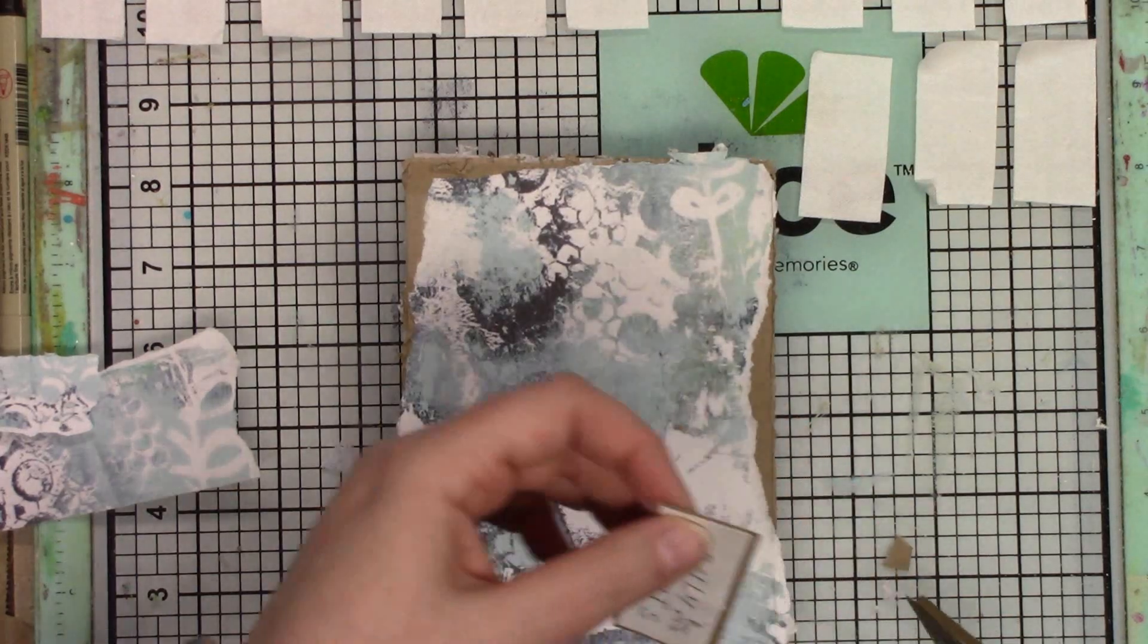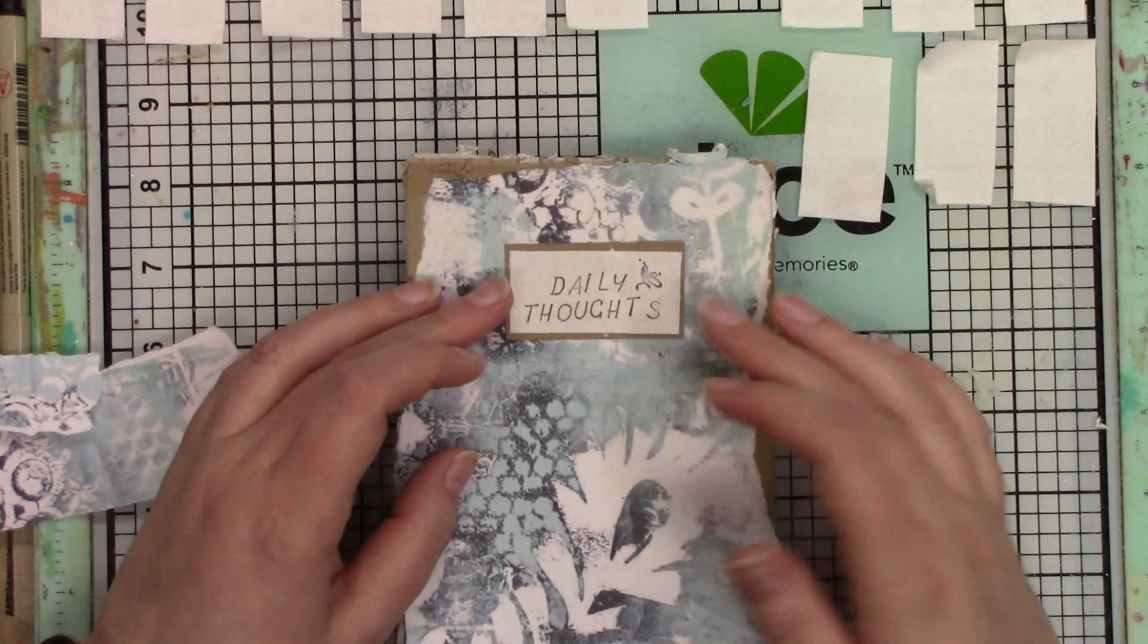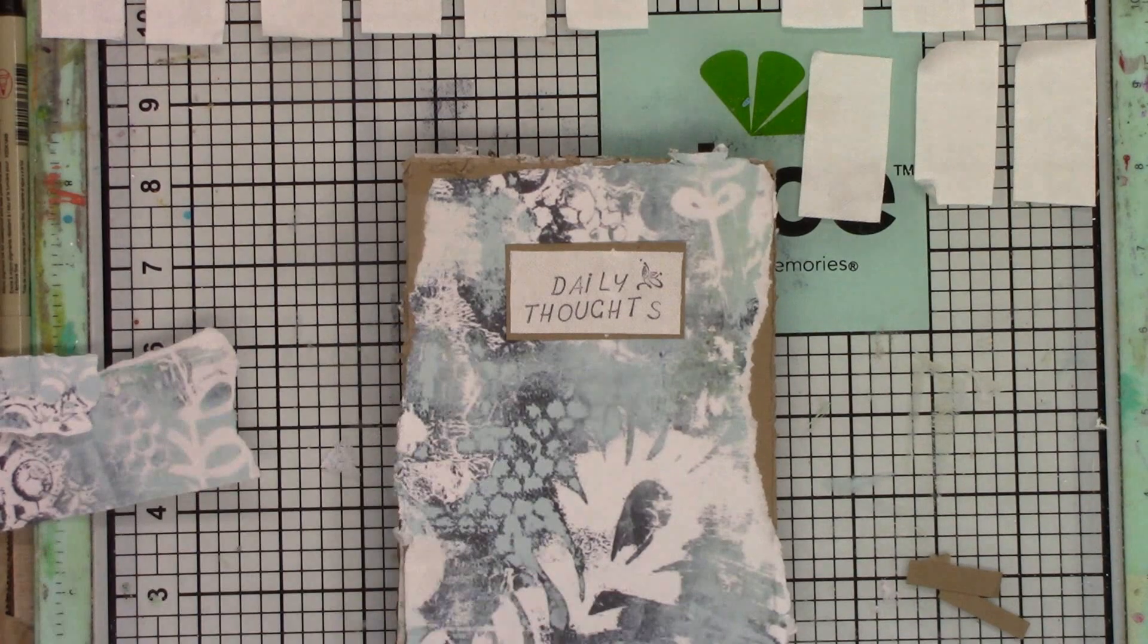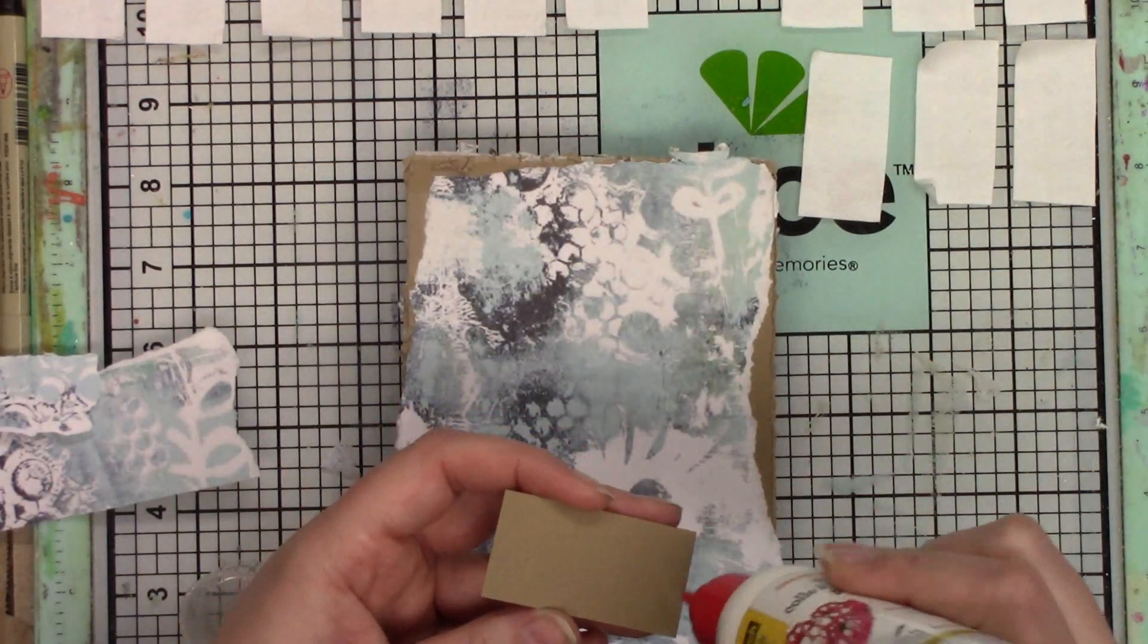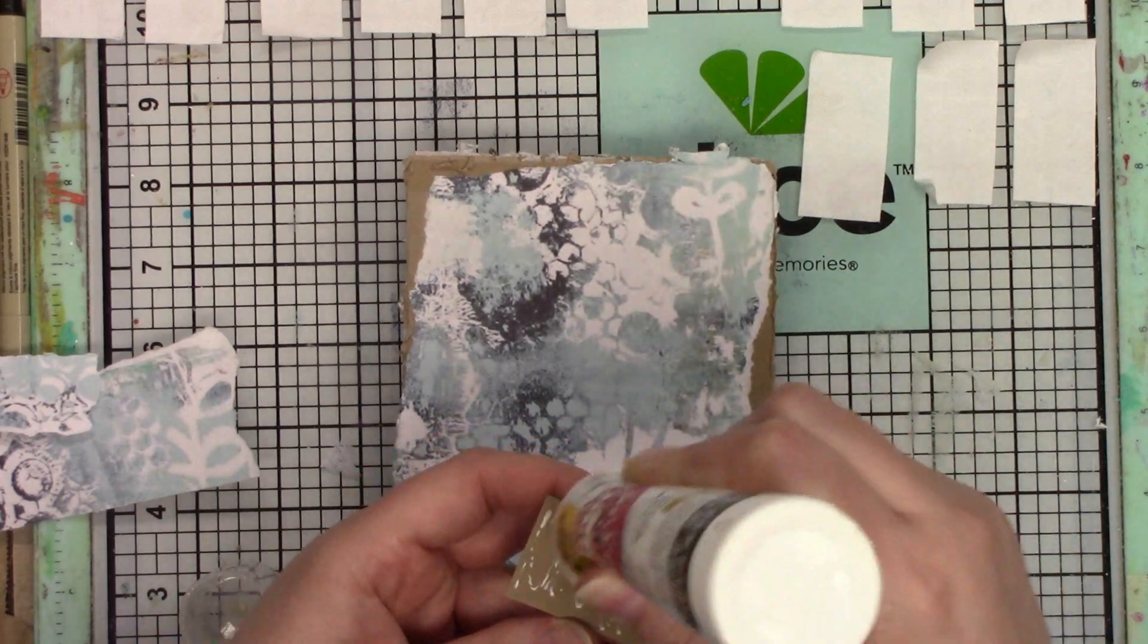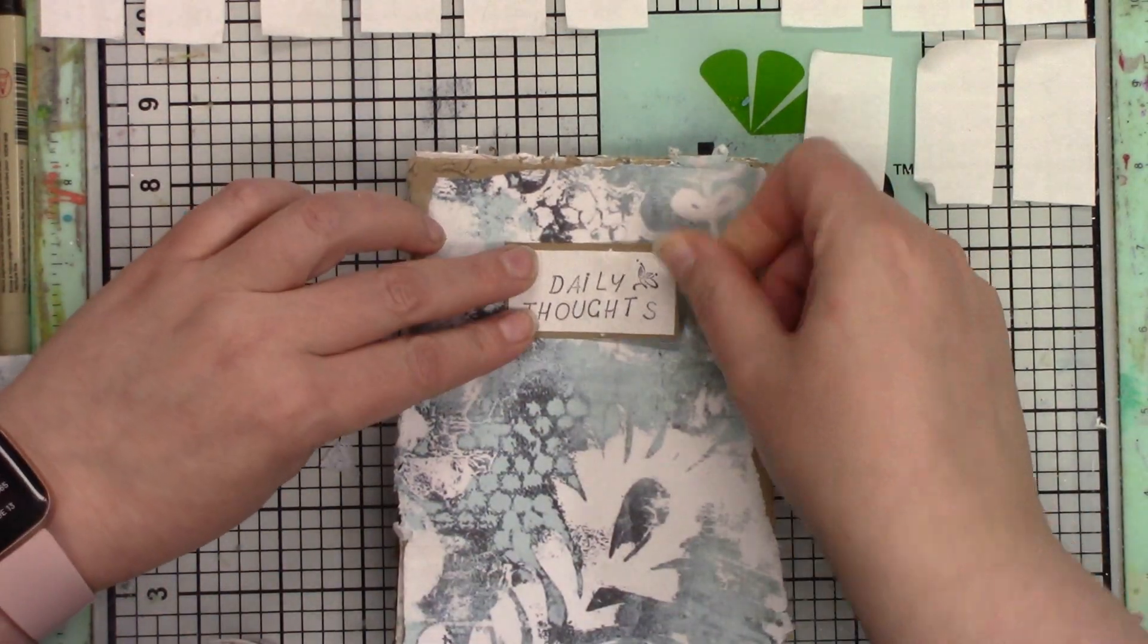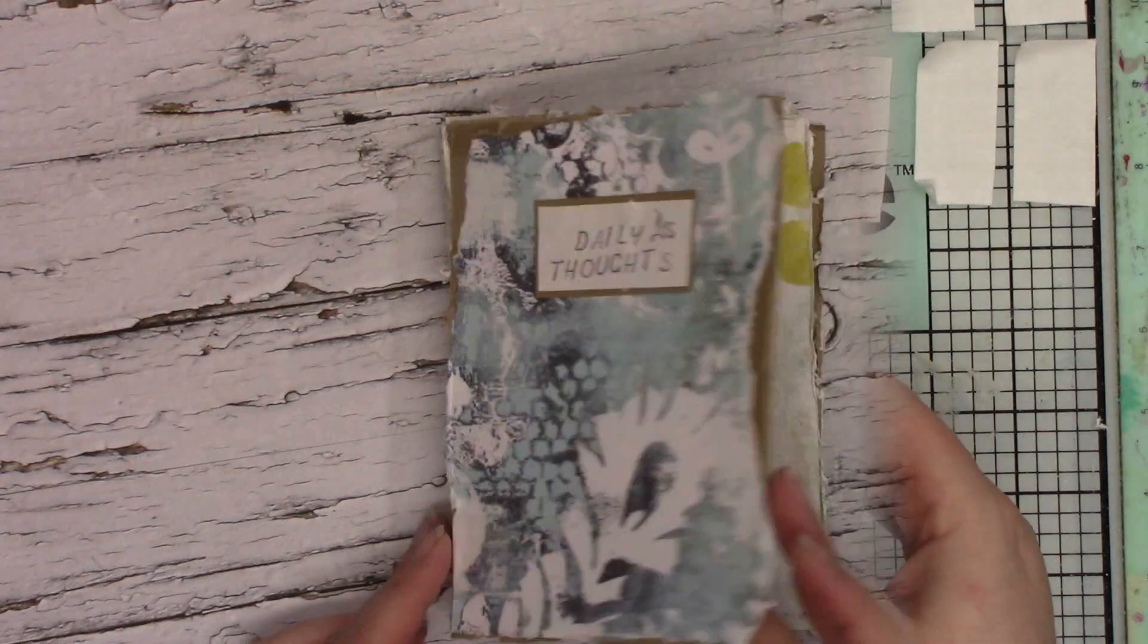And it peeled up nicely—I guess because I hadn't, you know, it wasn't stuck down for too long—so I was able to peel up all the pieces without doing any damage. So that is why on my album you can't see my binding anymore, because I use clear sports tape and I just got it at the dollar store.